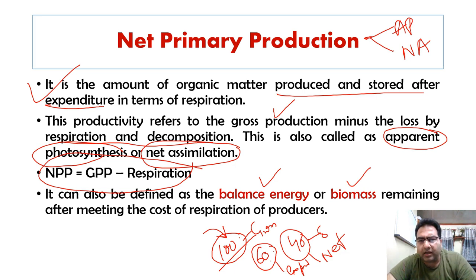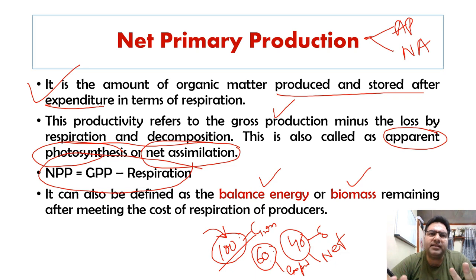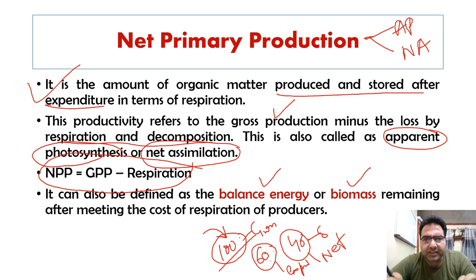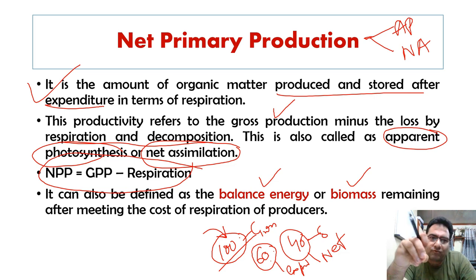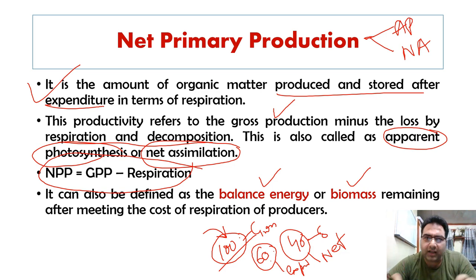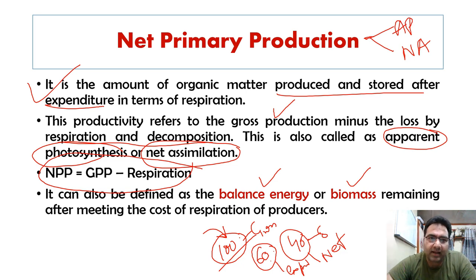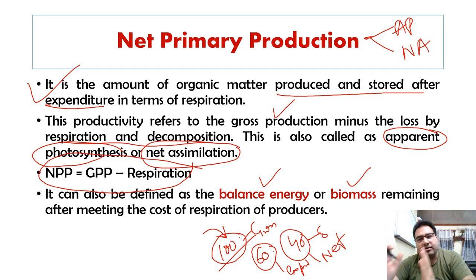NPP is said to be a measure of the amount of organic matter produced in a community in a given time, available for the heterotrophs. This net production is the energy the plant passes on to herbivores and decomposers. NPP is the energy to be passed on to the heterotrophs for the proper functioning of the ecosystem.